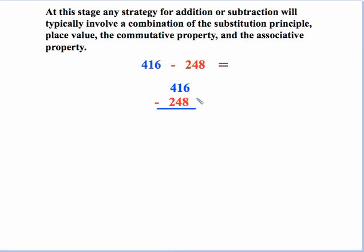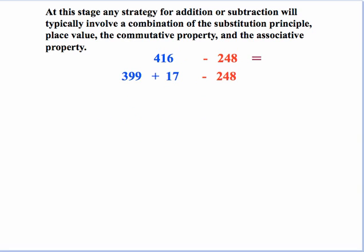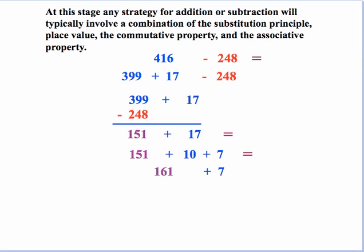Let's look at this problem. It's also difficult because of that same situation. We would have to decompose both our 1's and 10's places. If we do something similar to what we did a while ago, we can take the 416, break it down to 400 plus 16. And then take the 400, break it down to 399 plus 1. Then we can combine the 1 and the 16 to be 17. And so now we're set. So now we can convert this, the 416 to 399 plus 17. Now we can do our subtraction where we don't have to do any decomposing. That's 151 plus 17. And we can break the 17 down to 10 plus 7. Combine that and get 161. And now we can get our final solution of 168.